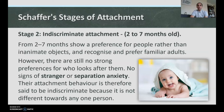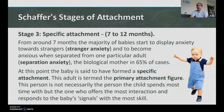Stage three is the specific attachment stage, from seven to twelve months. At around seven months, the majority of babies start to display anxiety towards strangers and become anxious when separated from one particular adult — separation anxiety — usually the biological mother in 65% of cases. At this point the baby is said to have formed a specific attachment, and this adult is termed the primary attachment figure — the one who offers the most interaction and responds to the baby's signals with the most skill.